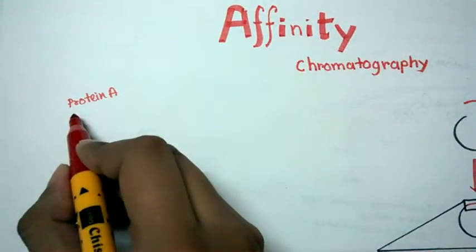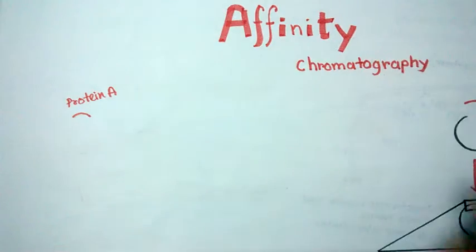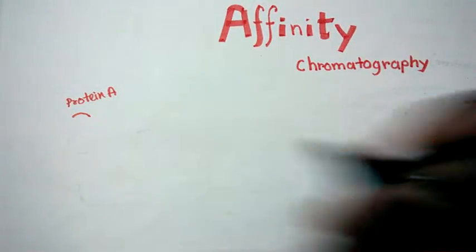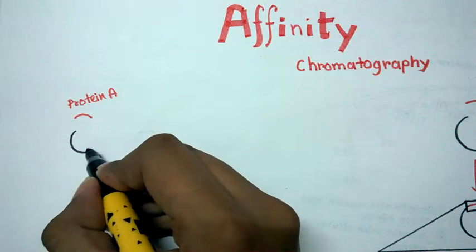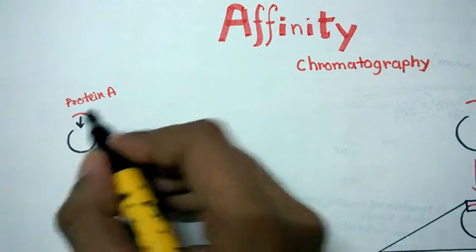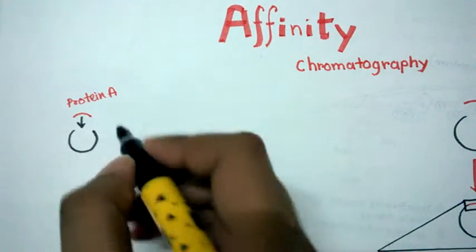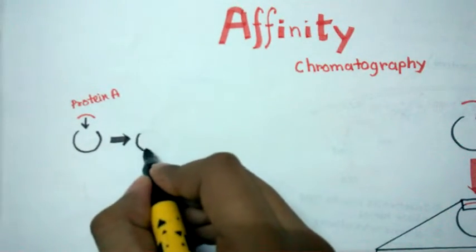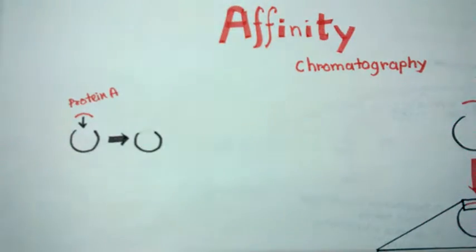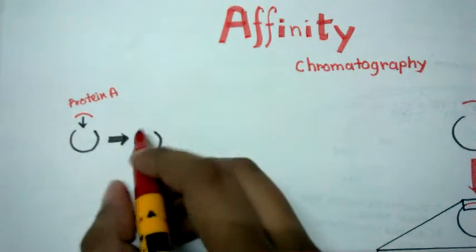So now we have a gene corresponding to this protein A which will encode for protein A. Now what we would do, we would put this gene inside this expression vector. For example, say it's a bacterial expression vector so that we can ask the bacteria to express our protein.